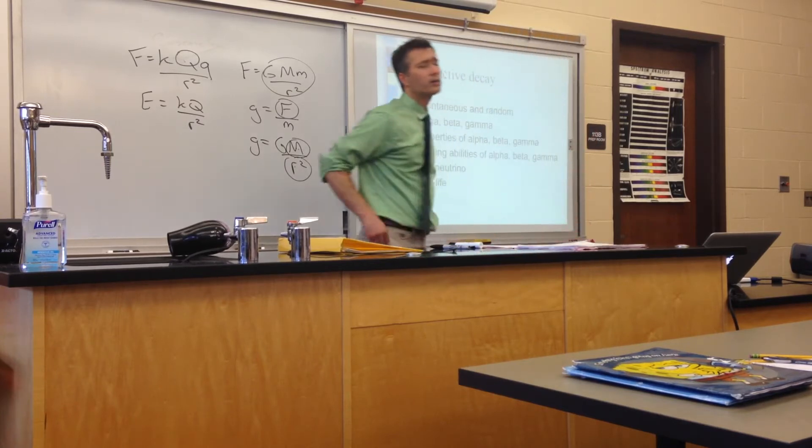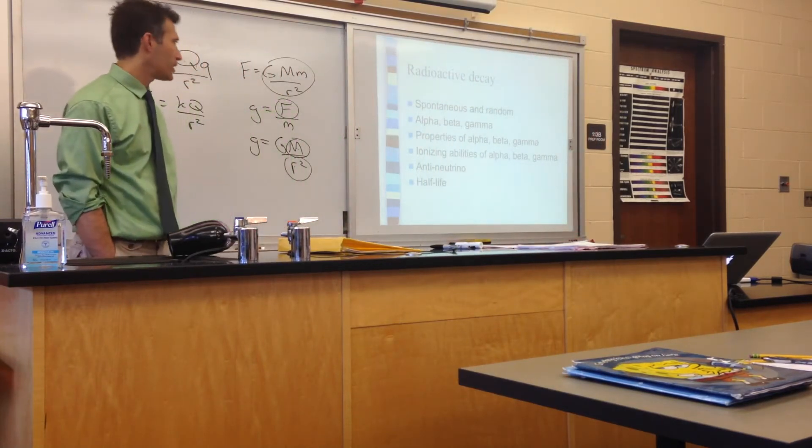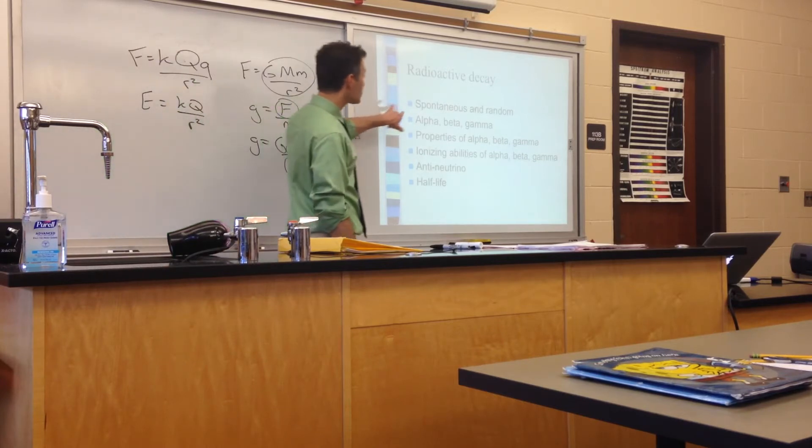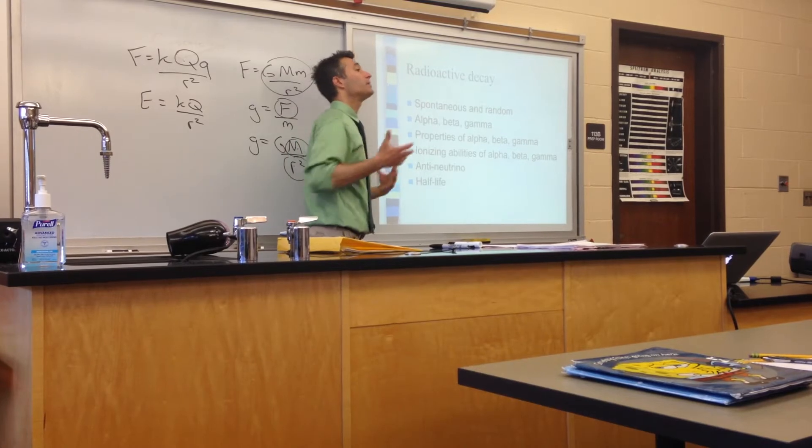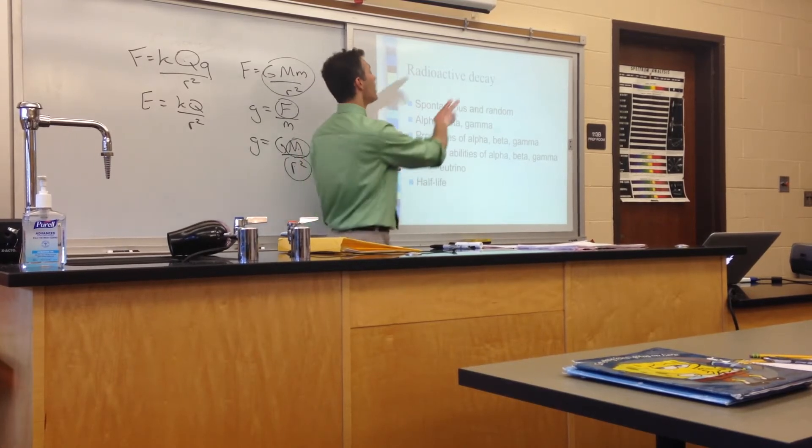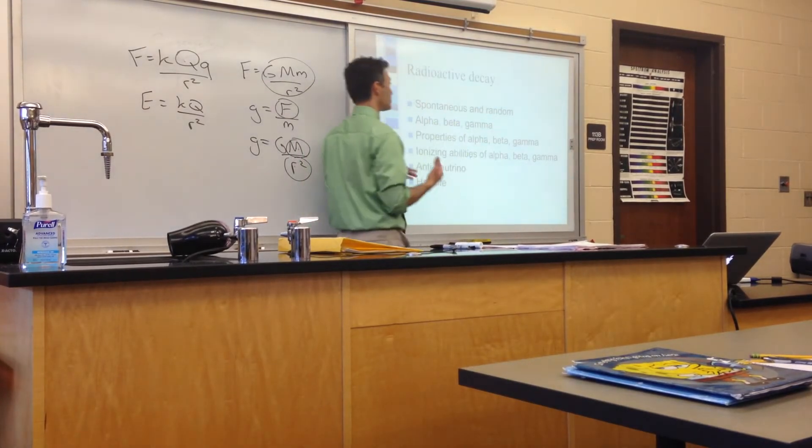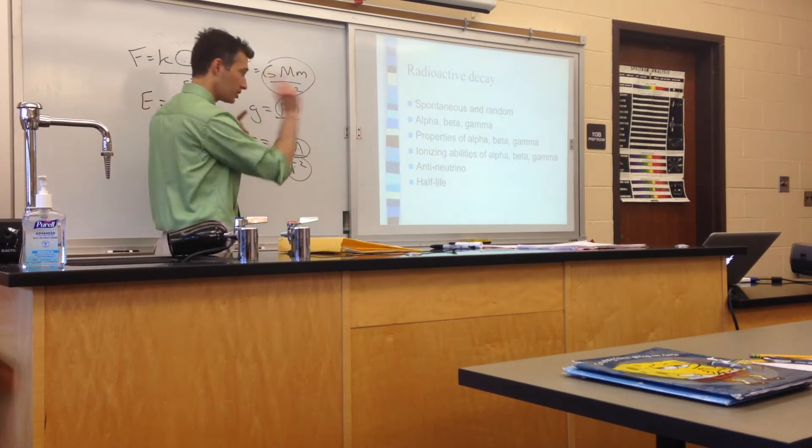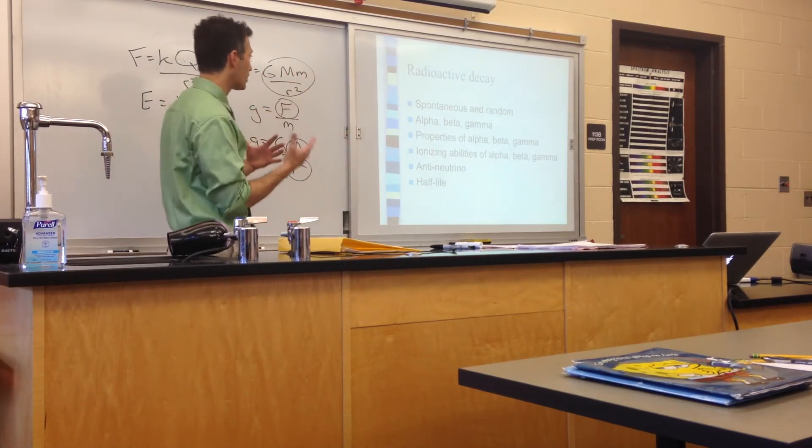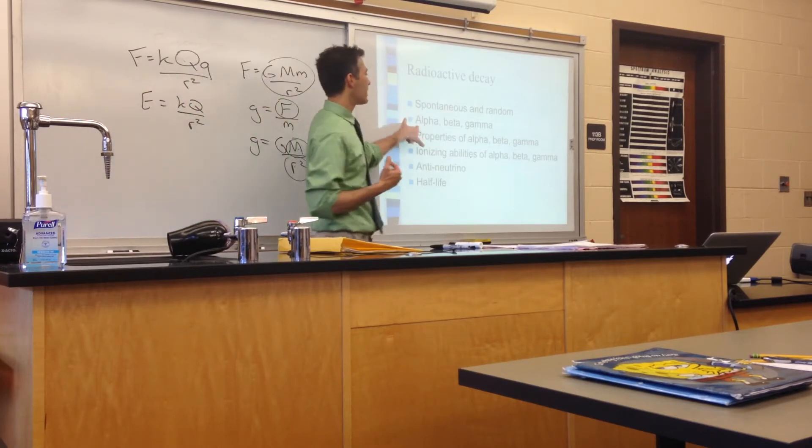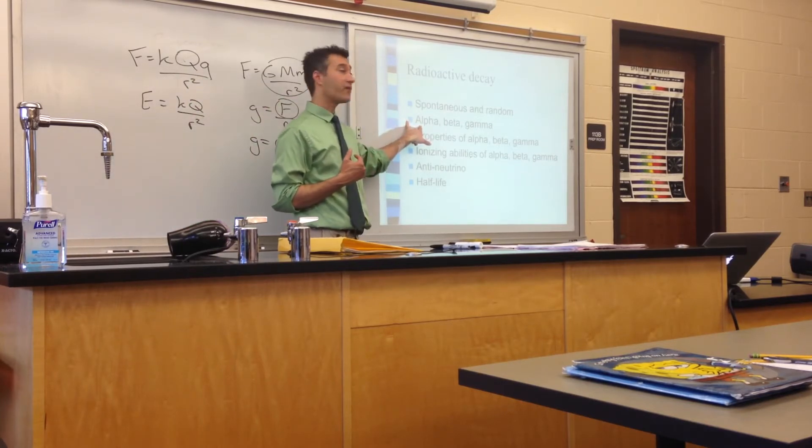We then went on to discuss radioactive decay. We did say that radioactive decay is spontaneous, and that it just happens. There's not a sequence of steps that leads up to it happening. It does just happen. There's no way we can predict which nuclei has the exact same probability as another nuclei of decaying. We have three main types of radioactive decay: alpha, beta, and gamma.